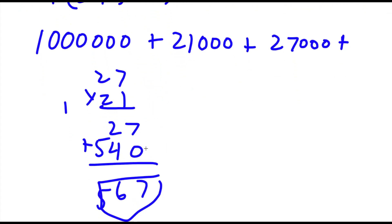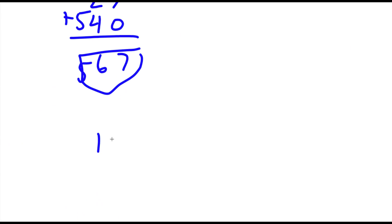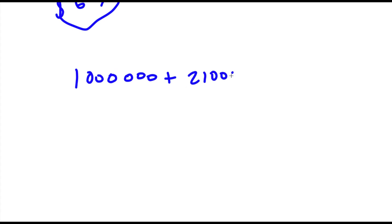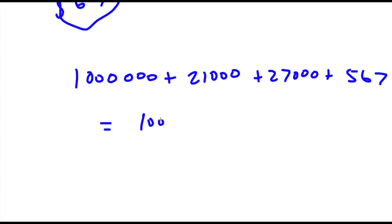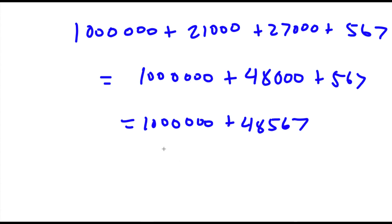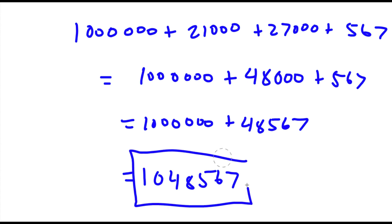So I have 1,000,000 plus 21,000 plus 27,000 plus 567. Now, 21,000 plus 27,000 is 48,000. Plus 567 gives us 48,567. And finally, 1,000,000 plus 48,567 is 1,048,567. So this is our answer.